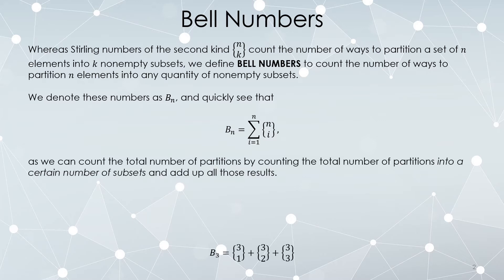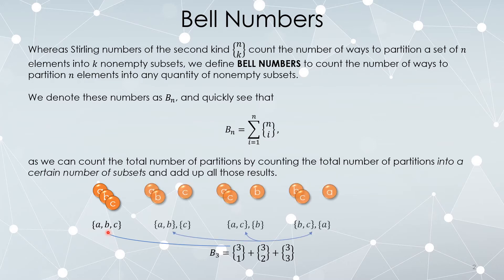For example, the Bell number b sub 3 counts the number of ways to partition three elements into any number of subsets. It can be written as the number of ways to partition three elements into one subset, plus two subsets, plus three subsets. If we use only one subset, we use the entire set. If we use two subsets, two elements go in one set and one in the other — there are three distinct ways to do that. If we use three subsets, each element gets its own subset.